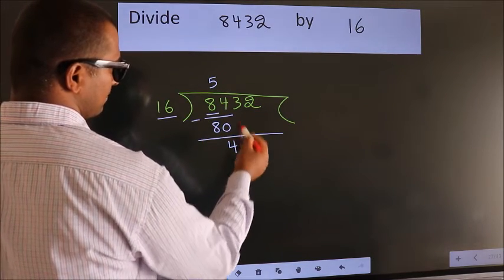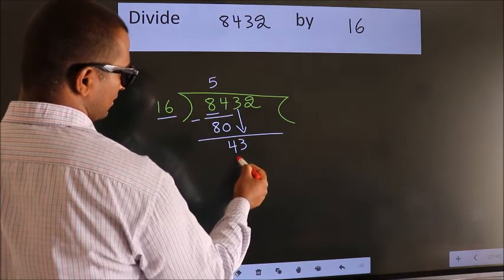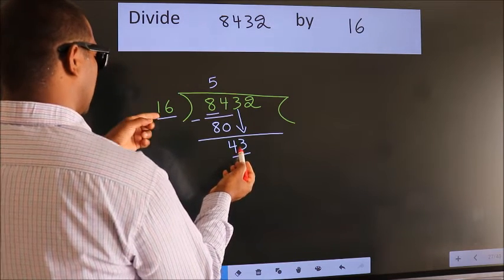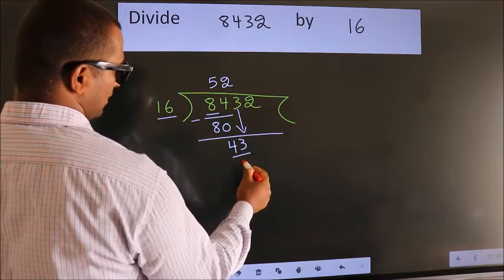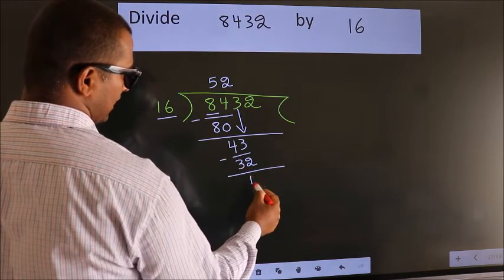After this, bring down the next number. So 3 down. So 43. A number close to 43 in the 16 table is 16 times 2 equals 32. Now we subtract. We get 11.